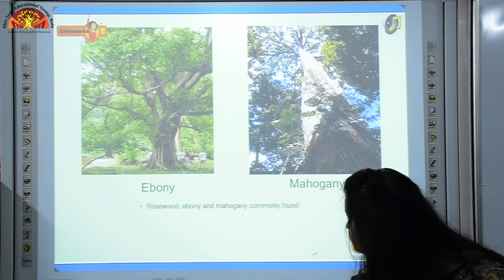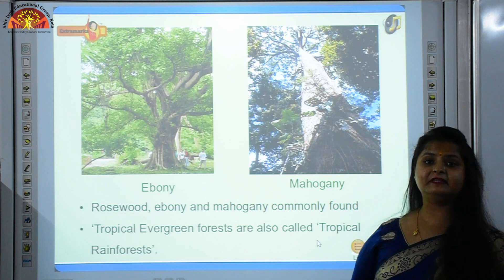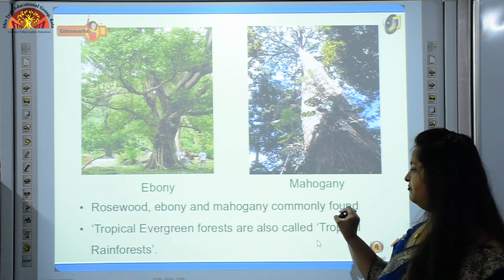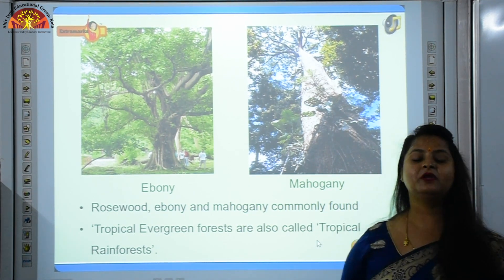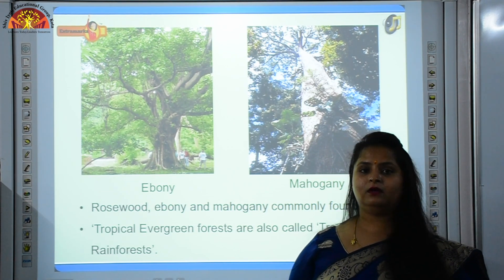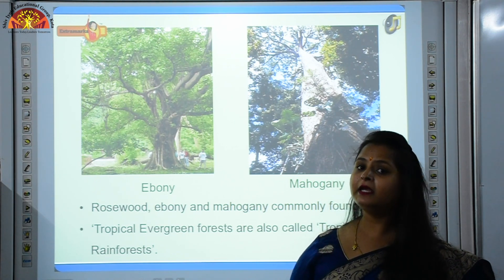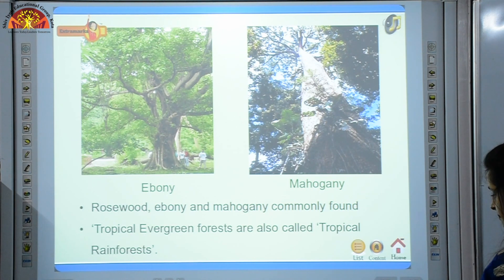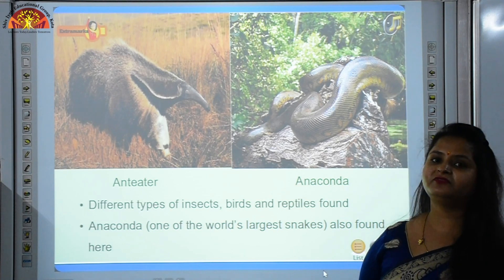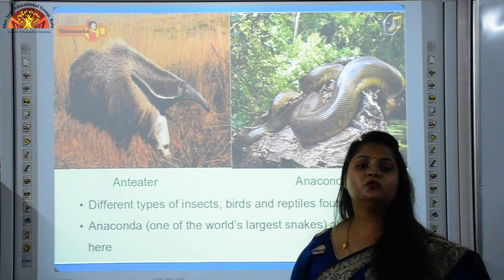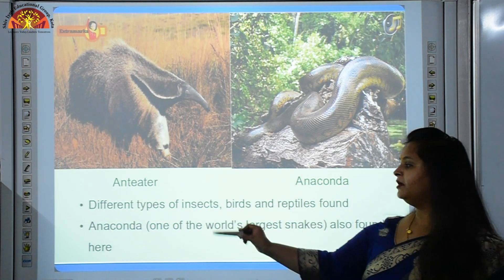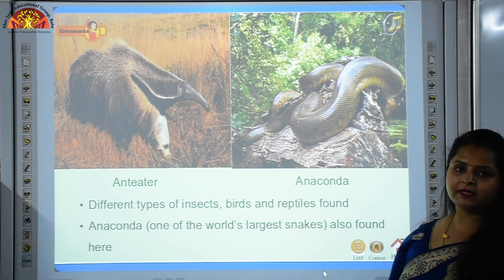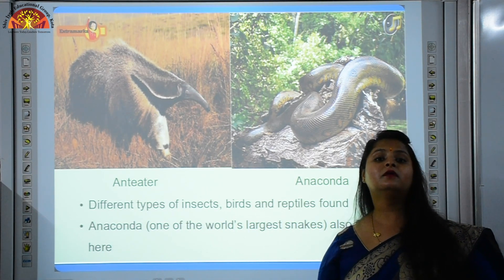What kind of vegetations are found in these forests? Ebony, mahogany, and rosewood are commonly found. Tropical evergreen forests are also called tropical rainforests because heavy rainfall is there throughout the year and they remain green throughout the year. As for wildlife, different types of insects, birds, and reptiles are found. Anaconda, one of the world's largest snakes, is also found here.